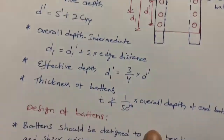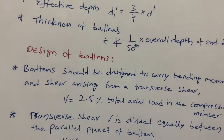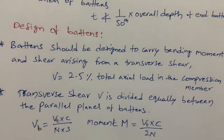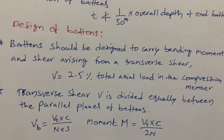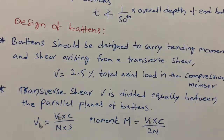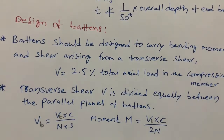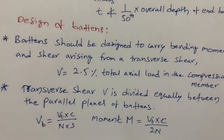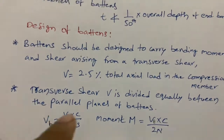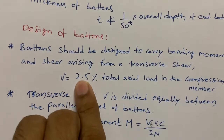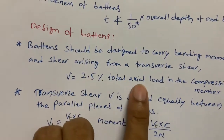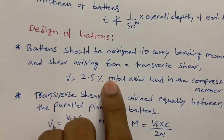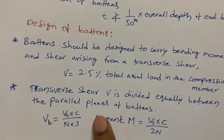These are all design details of the battens. When designing the battens, they should be designed to carry bending moment and shear arising from the transfer shear. As discussed in the previous video on lacing bars, the transfer shear V equals 2.5% of the total axial load in the compression member.